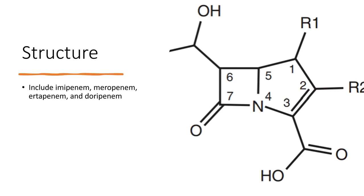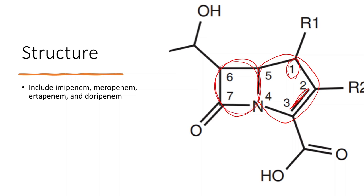When we talk about the carbapenem structure, like in penicillin you see the five-membered dihydrothiazine ring, but the difference in carbapenem is that in position one there was sulfur in penicillins, but it is carbon here, and there is a double bond — that is the only difference in this five-membered ring. They also have the four-membered beta-lactam ring, because carbapenems are beta-lactams.